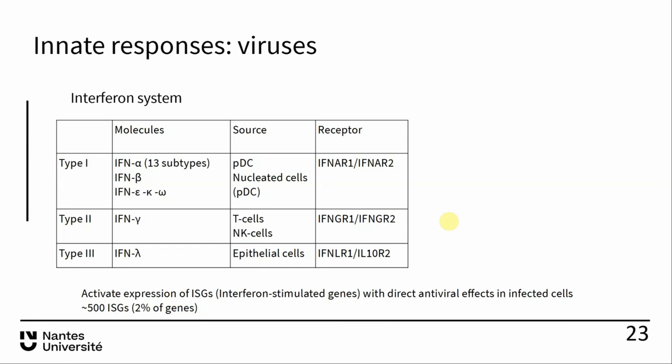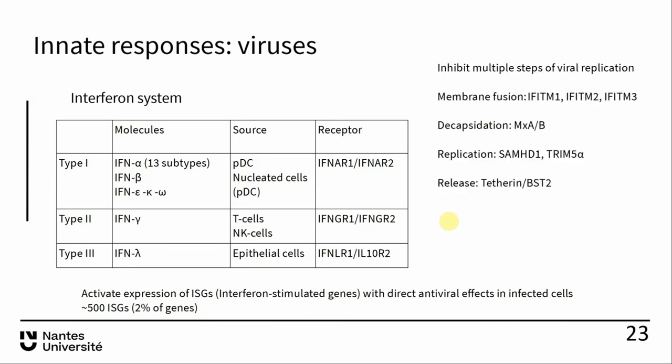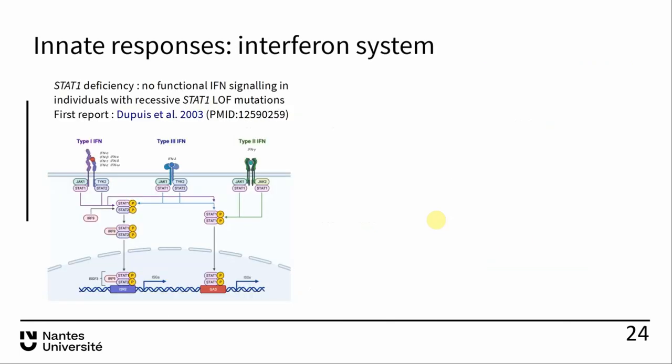Interferon binding to receptors induces expression of interferon-stimulated genes (ISGs) — about 500 of them, roughly two percent of our coding genome. These ISGs have direct antiviral effects at different stages of the virus replication cycle: some inhibit membrane fusion between enveloped viruses and cellular membranes, some inhibit decapsidation (like TRIM5α), some inhibit replication, and some inhibit virus release. Other ISGs target viral genomes for mutation or destruction: the OAS/RNaseL system destroys RNA virus RNA, and the APOBEC system induces inactivating mutations in viral genomes.